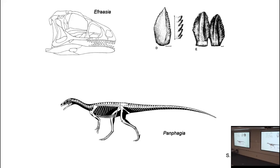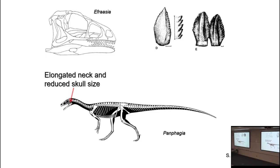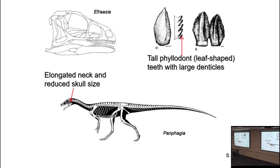One thing that makes a sauropodomorph a sauropodomorph is that they have an elongated neck — although to be fair, so do early theropods. They also have a reduced skull size compared to the body. Like ornithischians, they have phyllodont — leaf-shaped — teeth. Whereas ornithischian phyllodont teeth tend to be relatively broad, those of sauropodomorphs tend to be relatively tall, with great big denticles on the side.